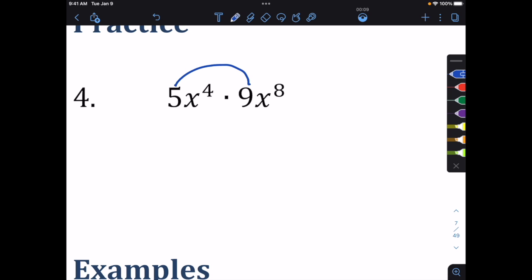I'm going to multiply my coefficients here. So 9 times 5 is 45. I'm going to change colors here. And I'll multiply my variables. x to the fourth times x to the eighth is x to the twelfth. And that's our final answer.